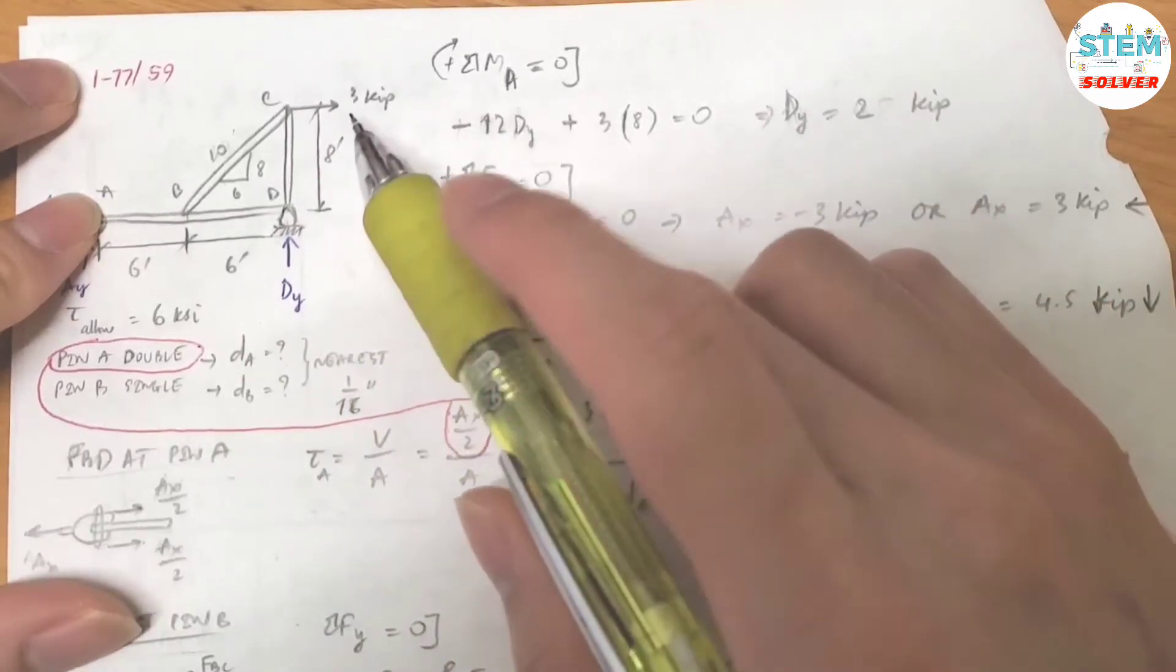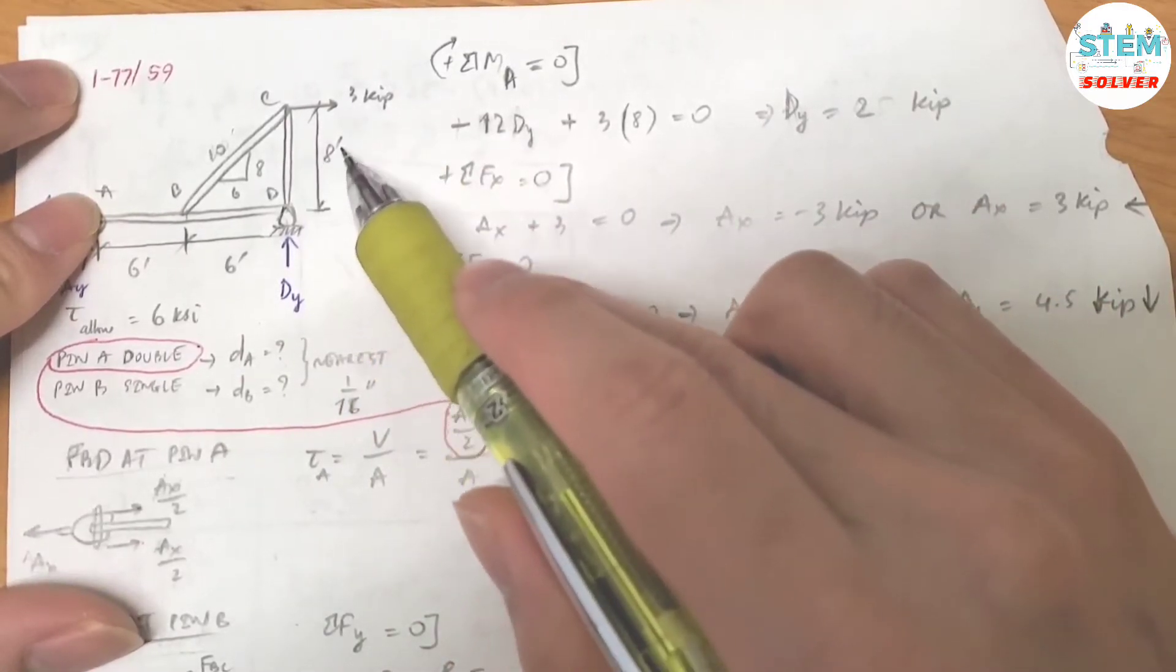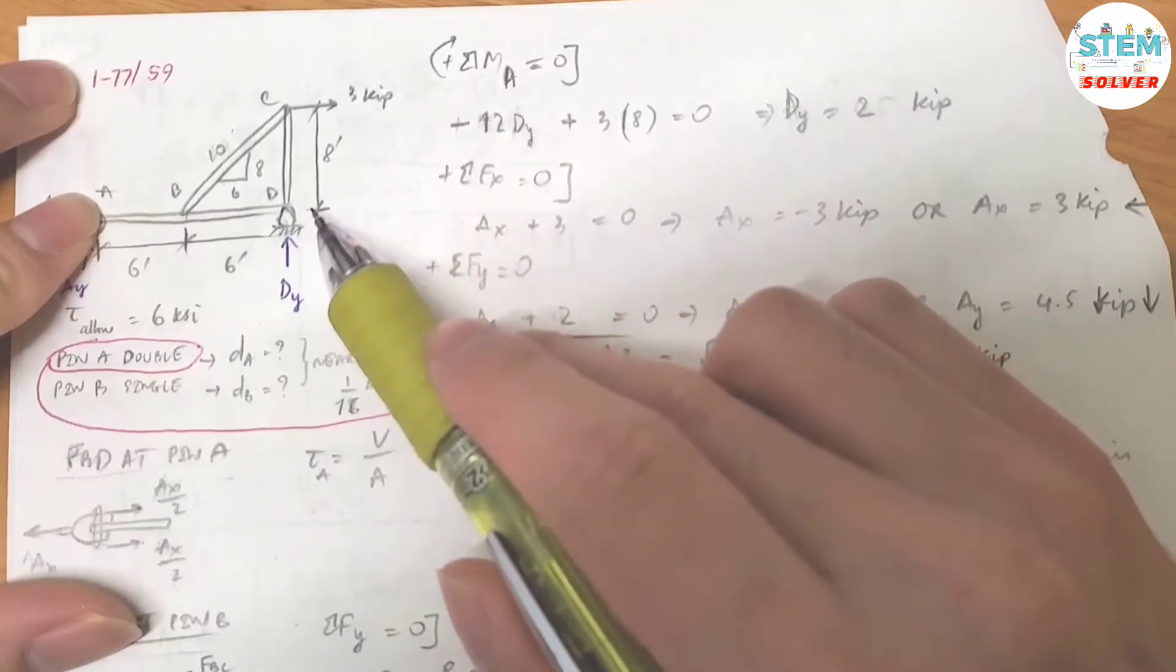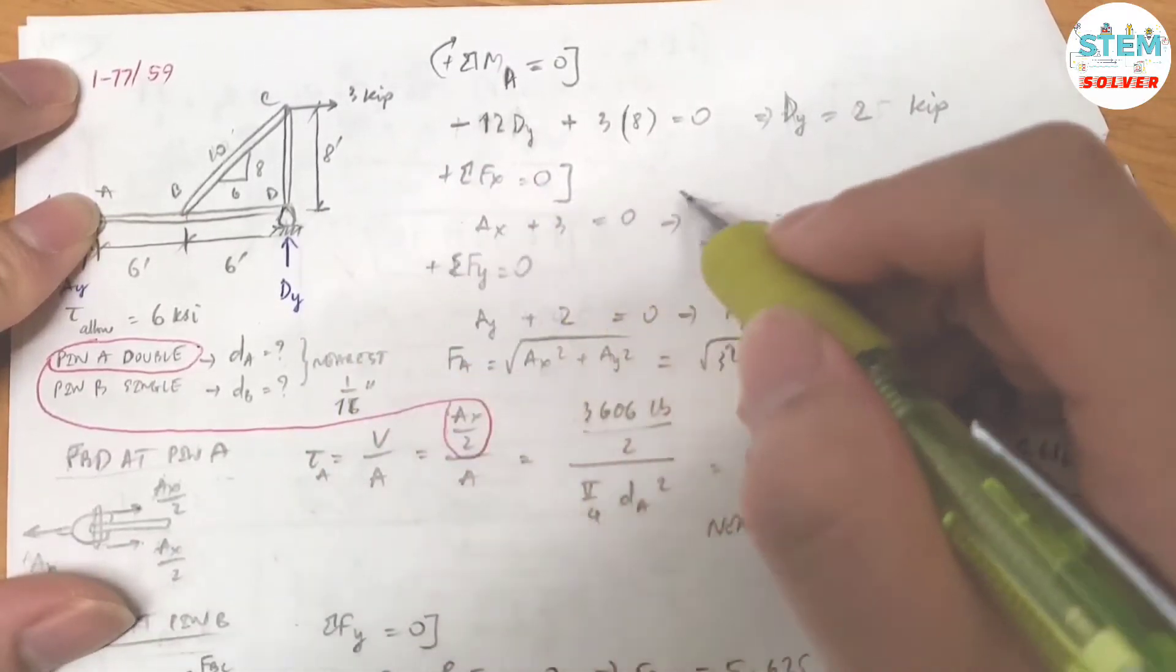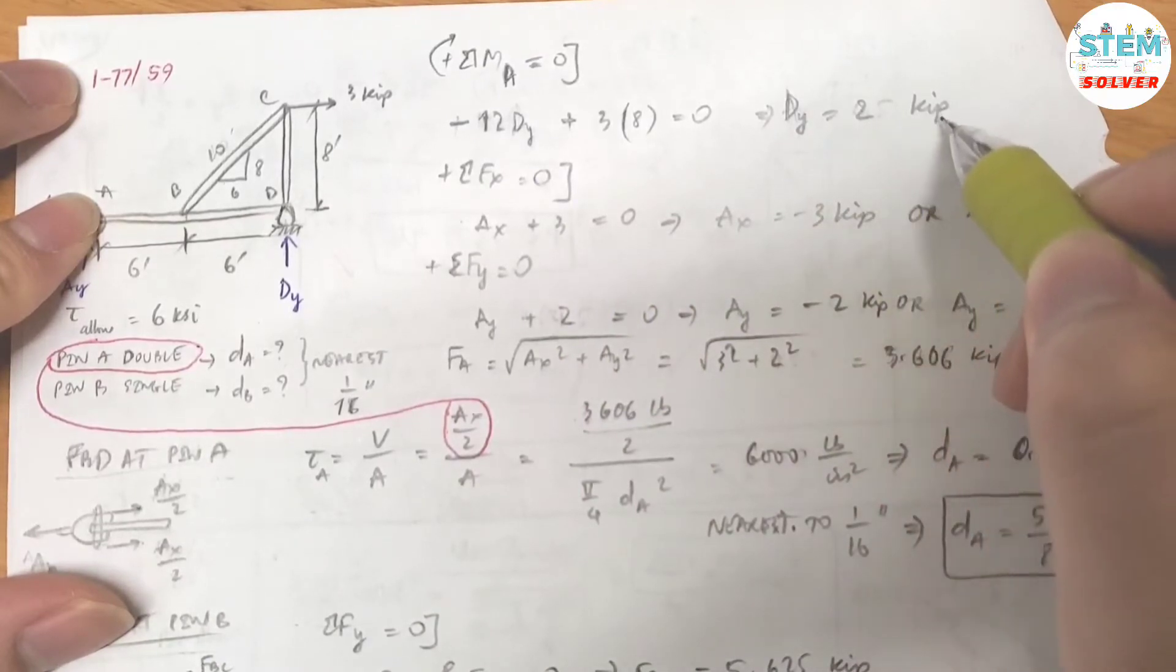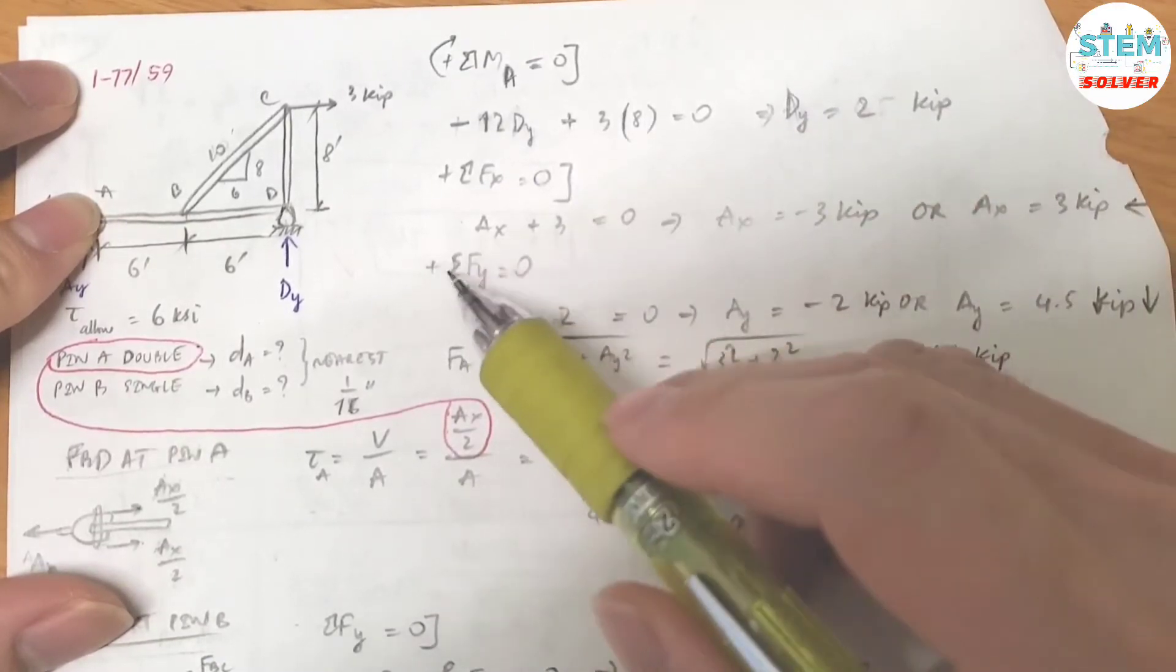Plus this force, so the distance is 8 and the force is 3. So I have 3 times 8, positive, because it's clockwise. Then I found out that DY is equal to 2 kips.